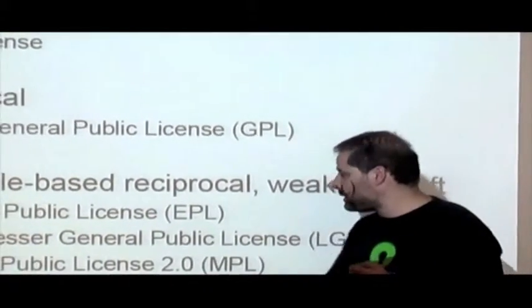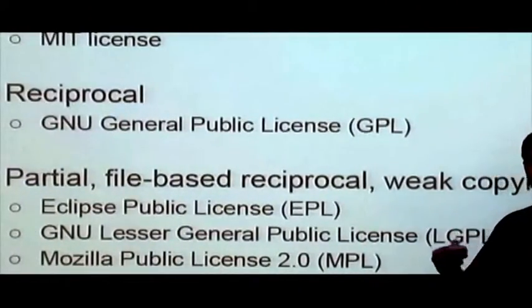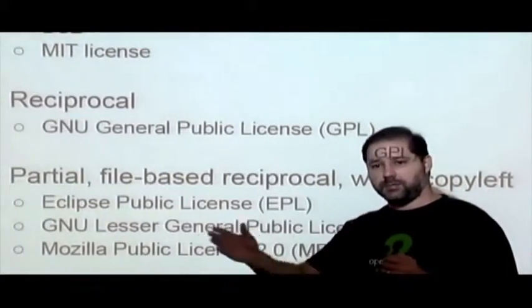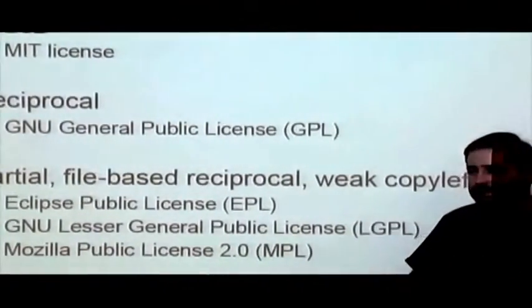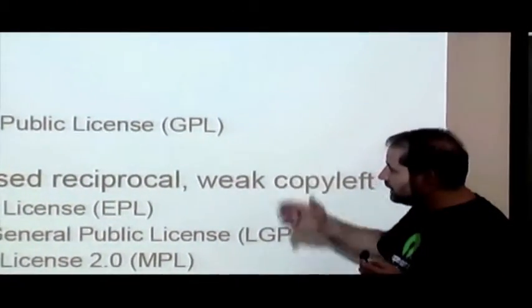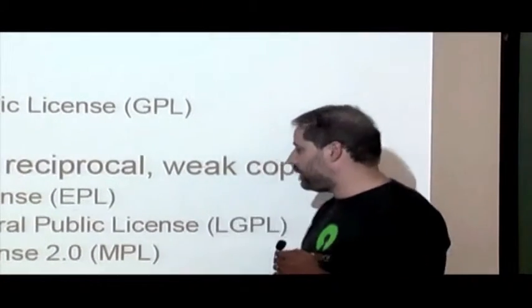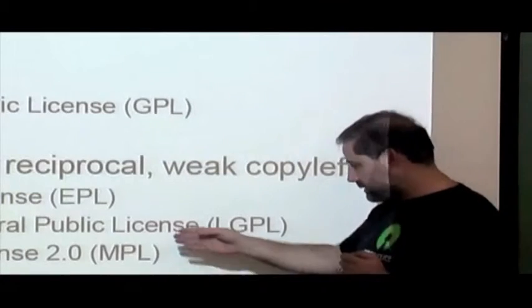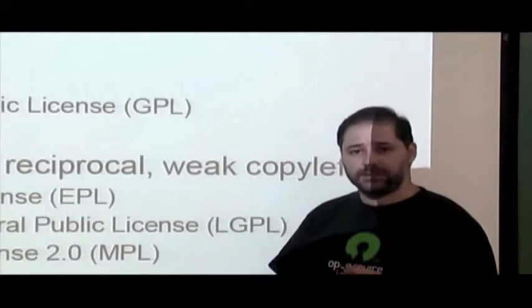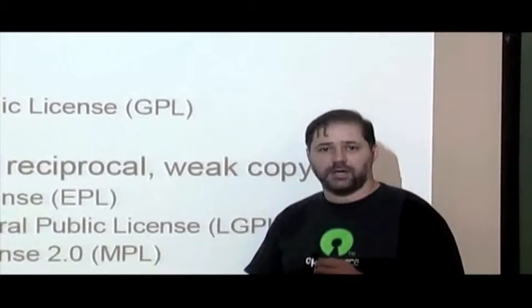For the partial or weak copyleft licenses, there are some very important ones. The Eclipse Public License (EPL) covers the Eclipse project, which permeates a lot of the development process. The LGPL is also based on the GPL and is extremely well-used. The Mozilla Public License has many derivatives and is also very widely used.